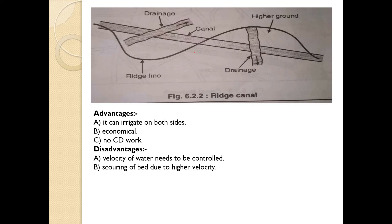As you can see, this is the ridge line and the canal follows this ridge line. Sometimes drainage is there, but no CD work is required. Advantages: It can irrigate both sides. It is economical because of the natural water flow in that region and no CD work is required. Disadvantages: The velocity of water needs to be controlled because of the natural slope, which is not in our control. There is also scouring of the bed due to higher velocity, causing erosion.